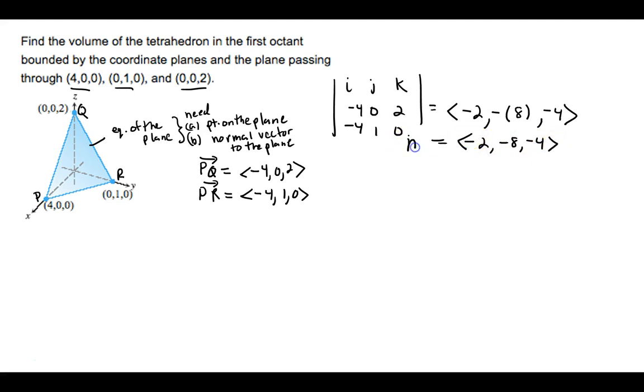That's going to be our normal vector. Well, any scalar multiple of that would work as well. We can pull out and factor out a negative 2. What we get is 1, 4, and 2, just easier to deal with smaller, non-negative numbers.